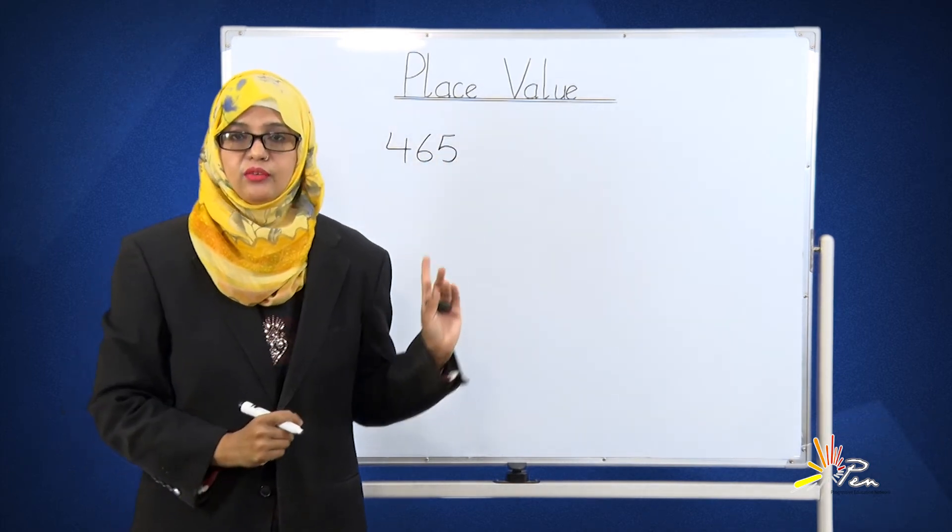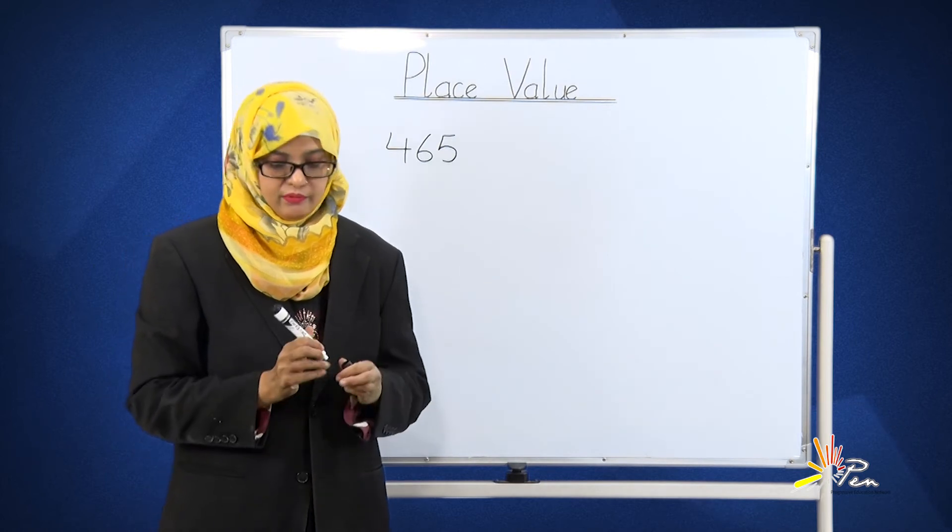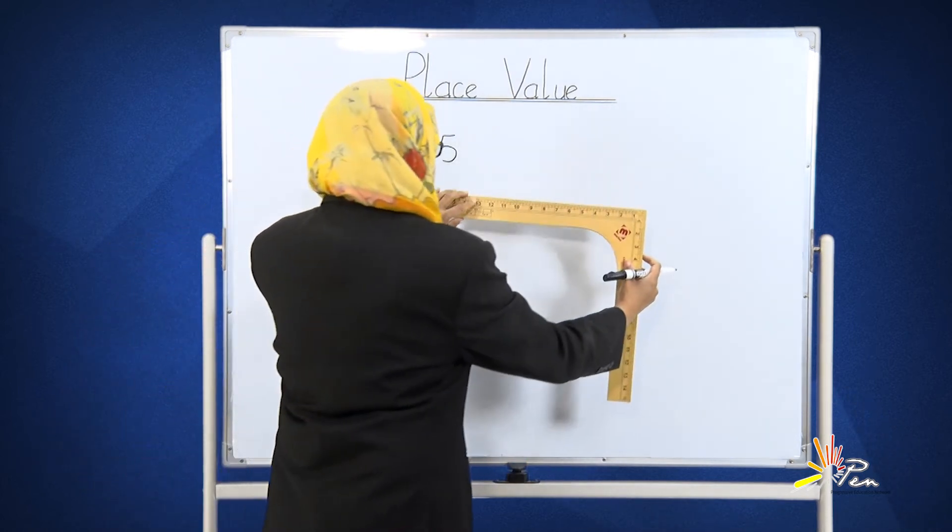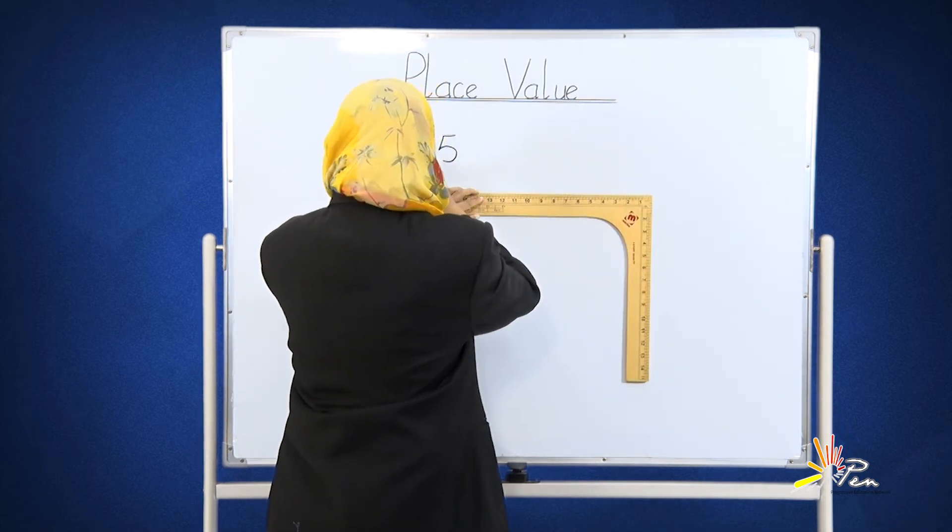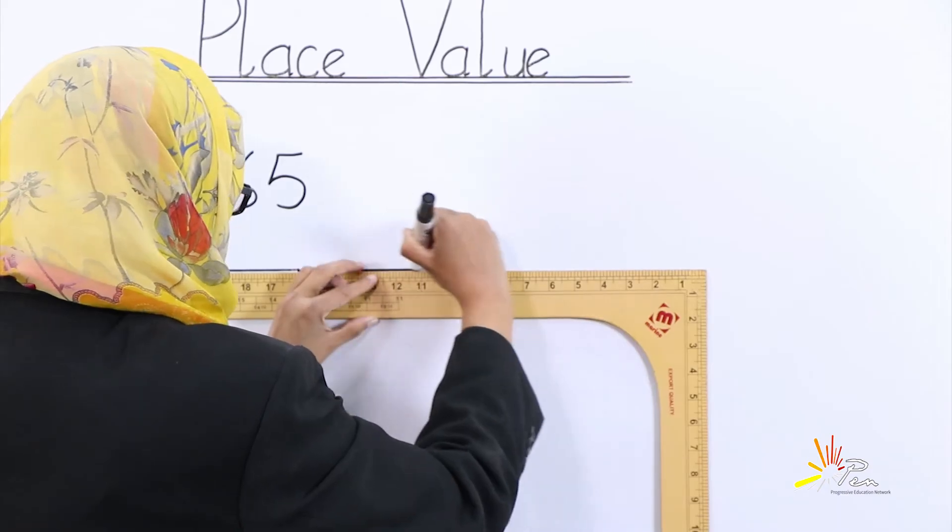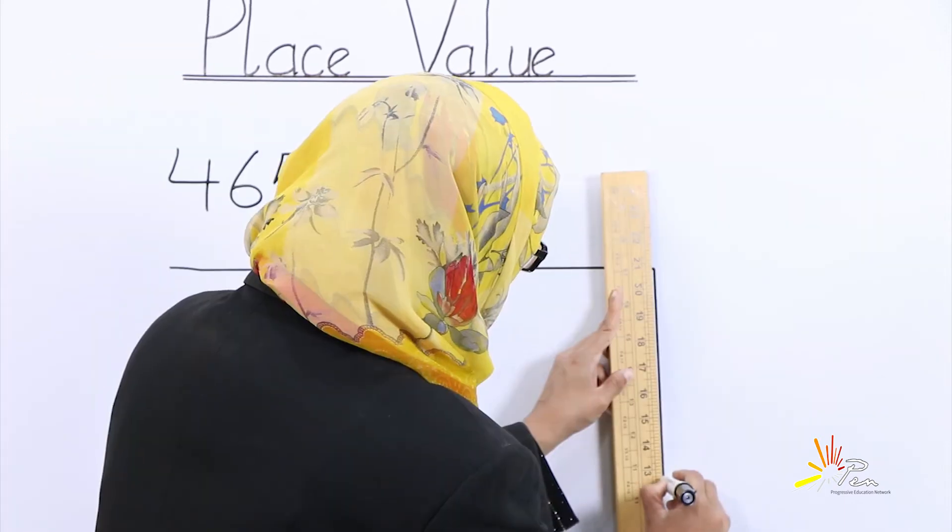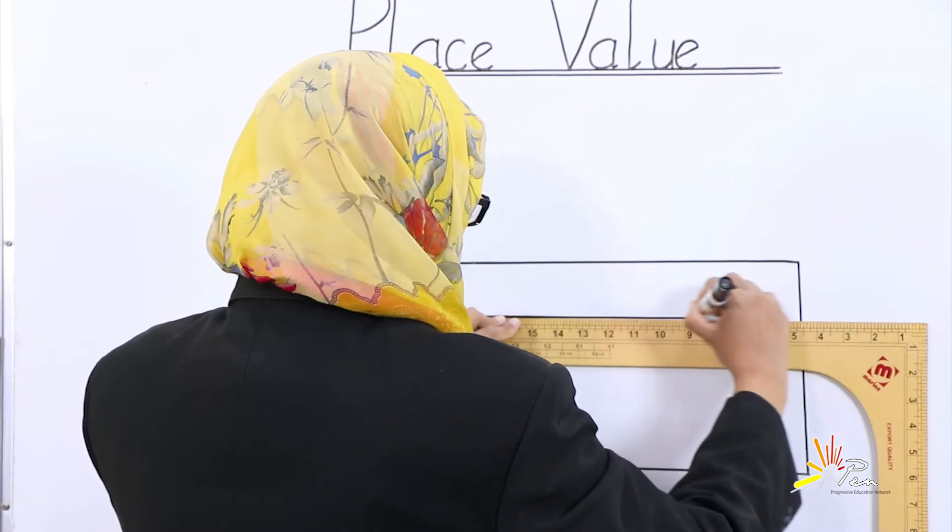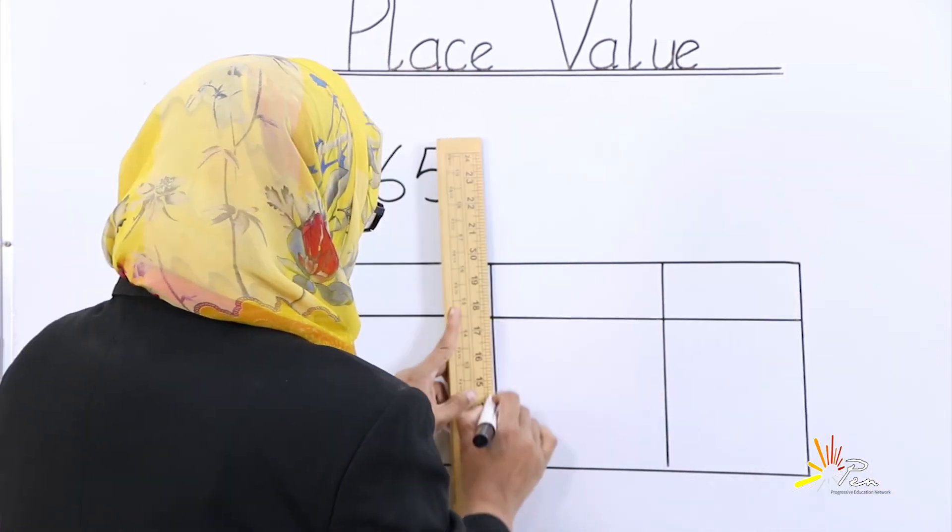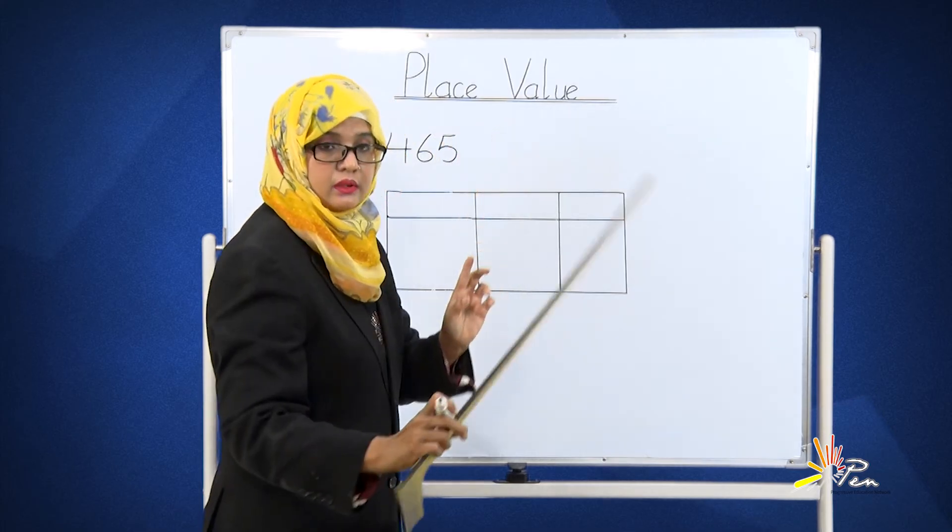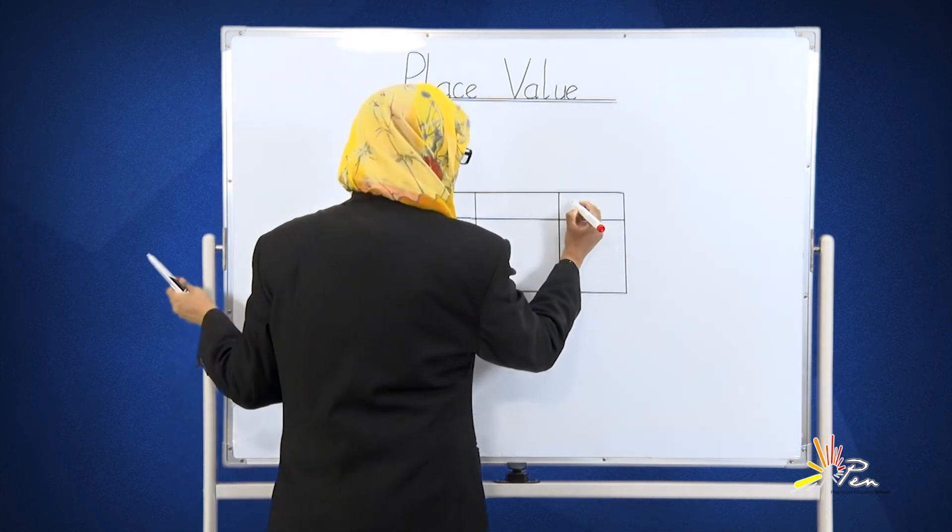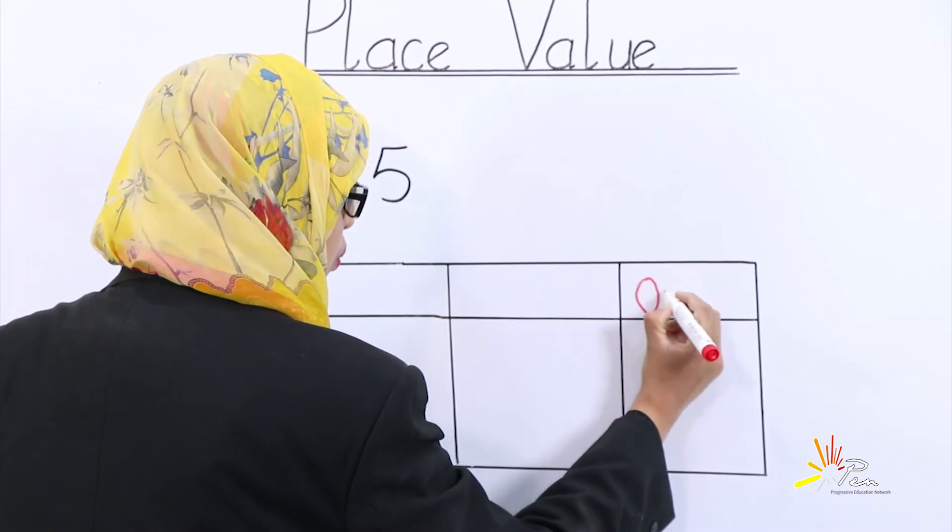The number we have is 465. We will draw a table here like before. If you want to draw on your copies, you can. We will divide it into three parts. Can you tell me the name of these three parts?